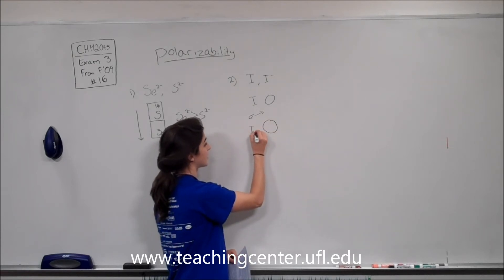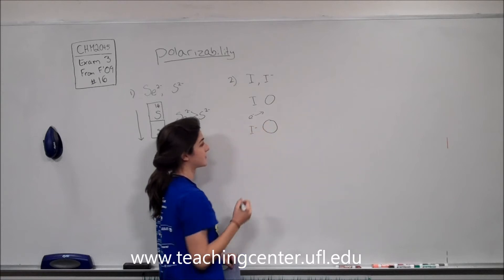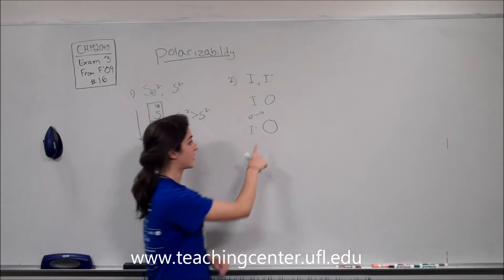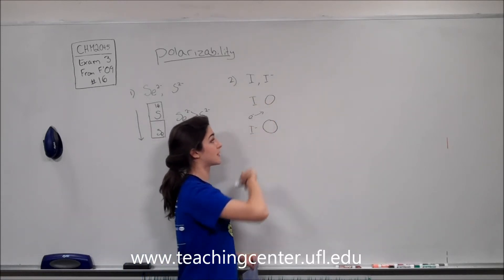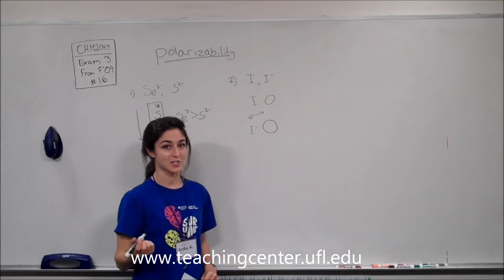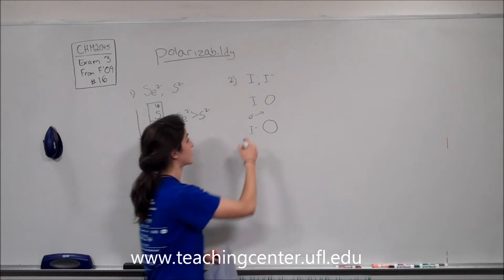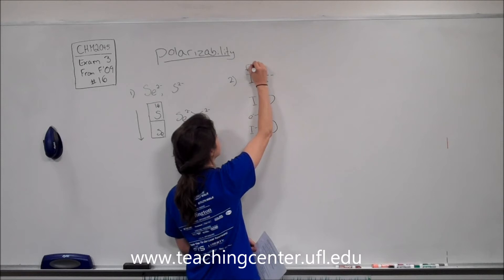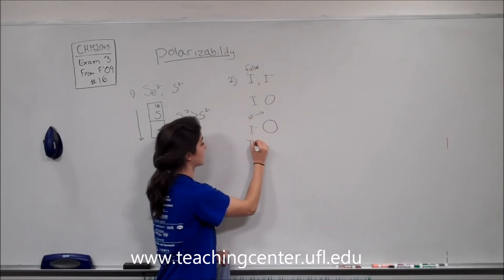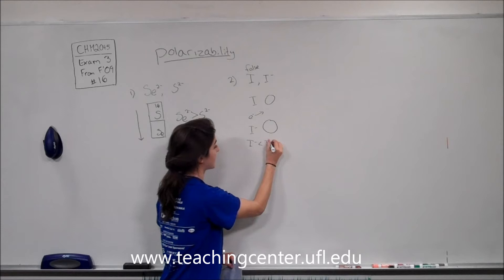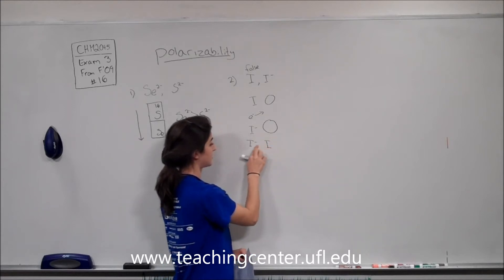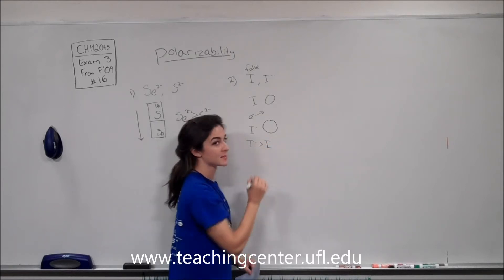So this here is I- for the added electron. So I- is going to be larger than its parent atom because it has the extra electron to deal with. So this one is false because I- is larger than its parent atom. More polarizable.